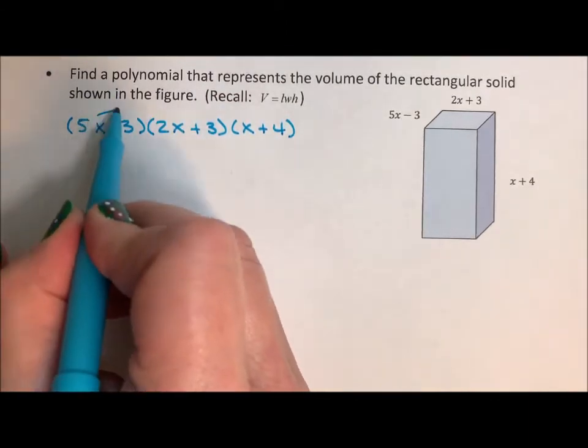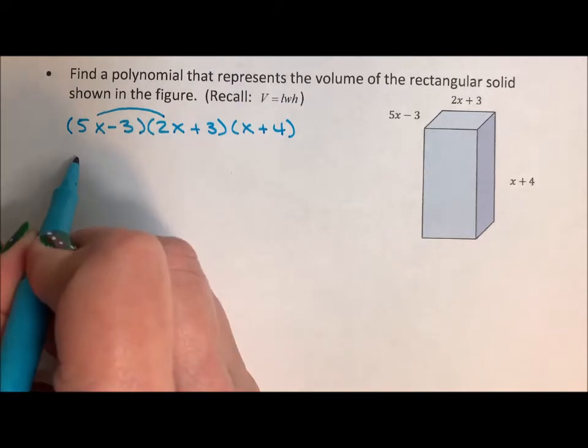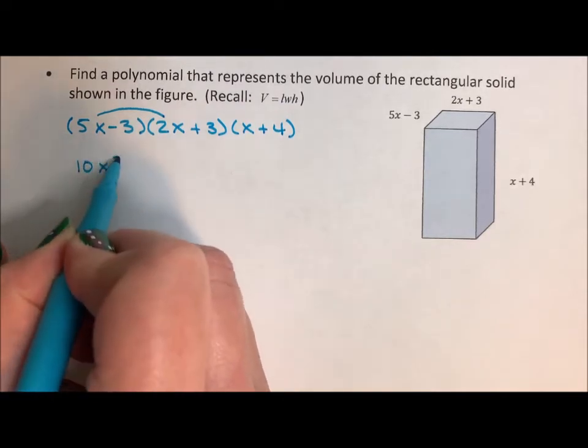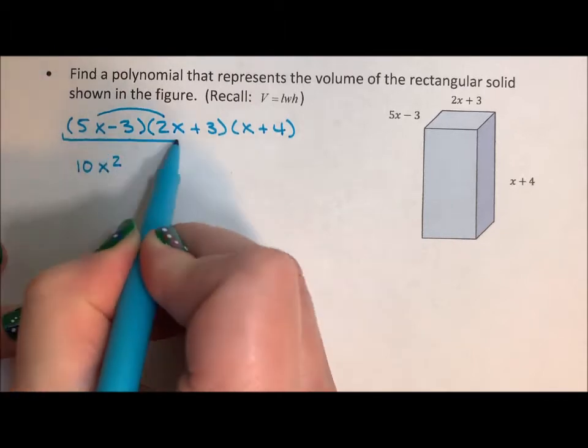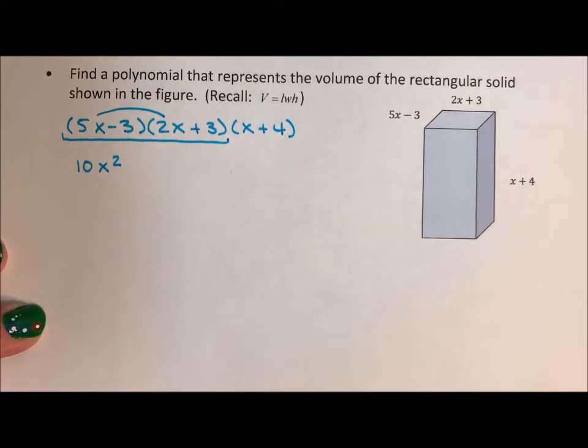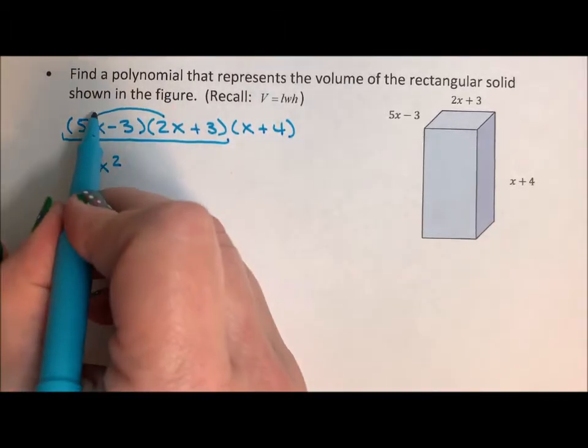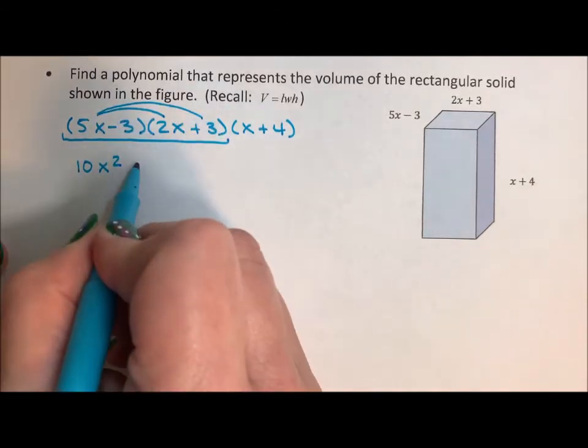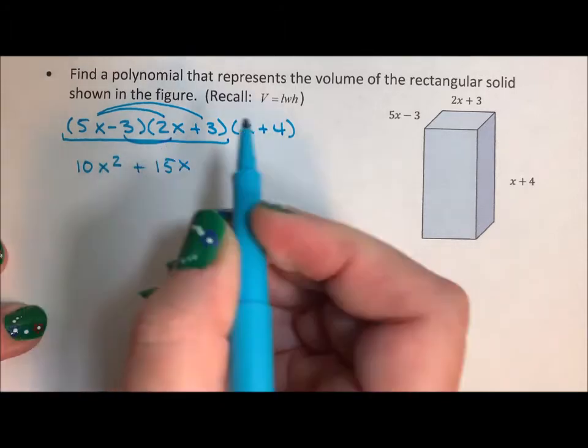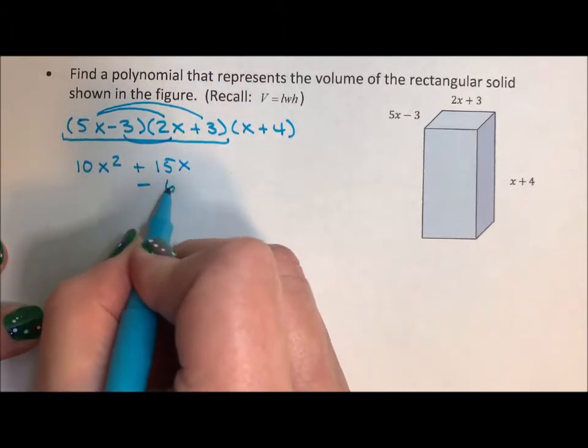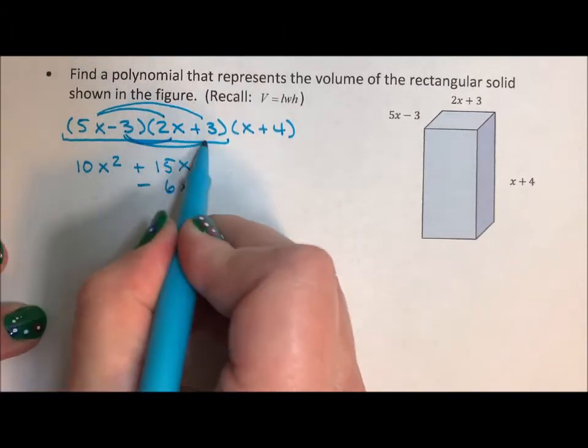So 5x times 2x is 10x squared. I'm doing 2 at a time, by the way. We don't multiply 3 at a time. 5x times 3 is 15x. Negative 3 times 2x is negative 6x. And negative 3 times 3 is negative 9.